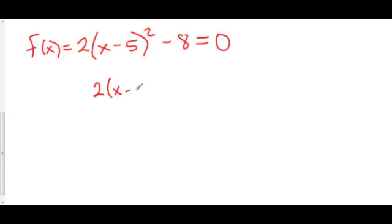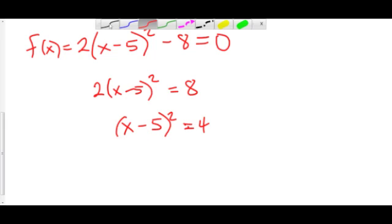So we have 2 times x minus 5 squared is equal to 8. Divide both sides by 2. So we have x minus 5 quantity squared is equal to 4. We can solve this pretty easily by taking the square root of both sides.